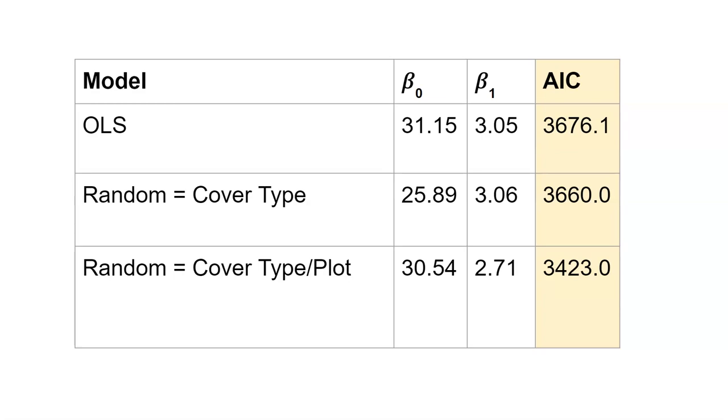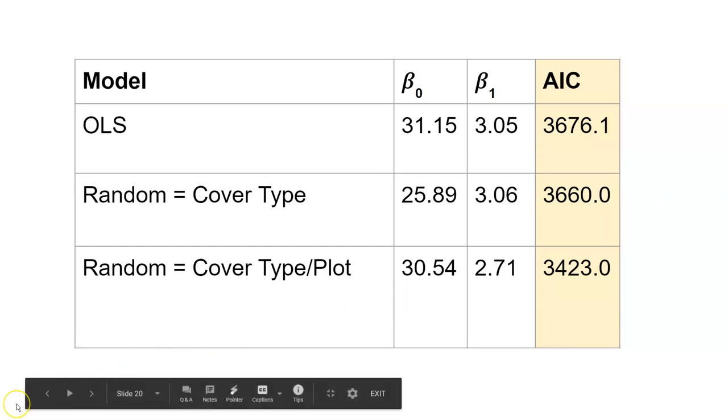In the AIC, remember, the lower the value, the better. We can see here the lowest AIC value is from our model that specified the plot nested within the cover type as the random effect. We can see higher values for the ordinary least squares model and for the cover type as a random effect model. As you begin to see which kinds of models and which parameters you should set as random, using a model evaluation tool like the AIC will be really valuable to you.